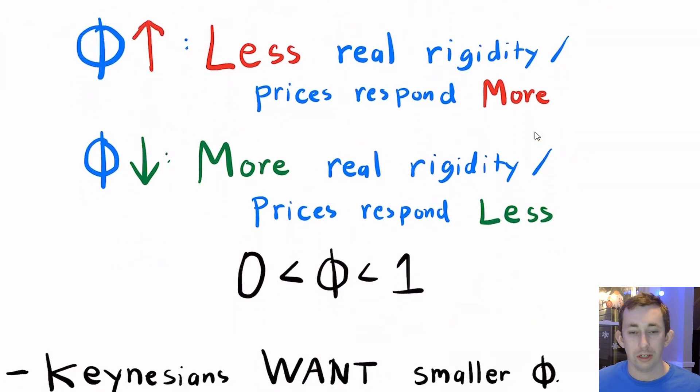So again, the real rigidity parameter can range between zero and one, it can't equal zero, and it cannot equal one. If it was exactly equal to one, then there would be no rigidity or no stickiness of prices at all.